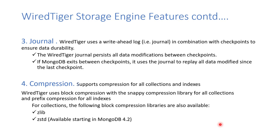Another key term in WiredTiger is the journal, which is a write-ahead log containing all transaction details. For example, if a checkpoint happened at 10:00 AM and the next one was scheduled for 10:05 AM, any transactions between those times are captured in the journal. If the system crashes at 10:04 AM, those journal entries between 10:00 and 10:04 are used for recovery.